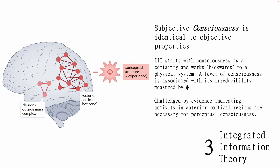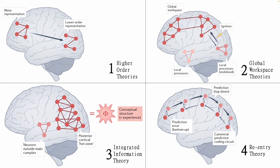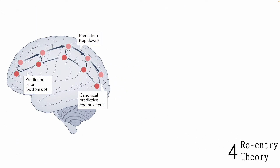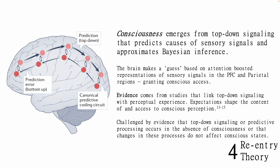Integrated information theory is difficult to substantiate, as producing a quantifiable measure of consciousness is fraught with challenge. Our fourth theory is re-entry theory. Looking at the figure, the core claim of re-entry theory is that conscious mental states arise from top-down signaling that predicts the cause of sensory stimuli. Errors in these predictions are constantly minimized by bottom-up signaling that together approximates Bayesian inference. Re-entry theory is largely substantiated by evidence revealing how top-down control is correlated to perceptual experience. Re-entry theory struggles to address more global states of consciousness, as it is more concerned with how local states of consciousness are brought to the fore of conscious perception.